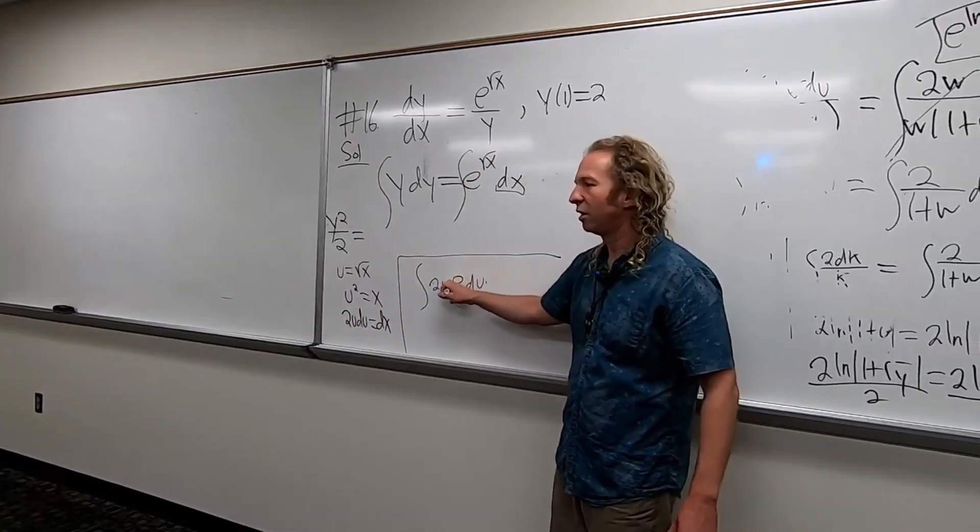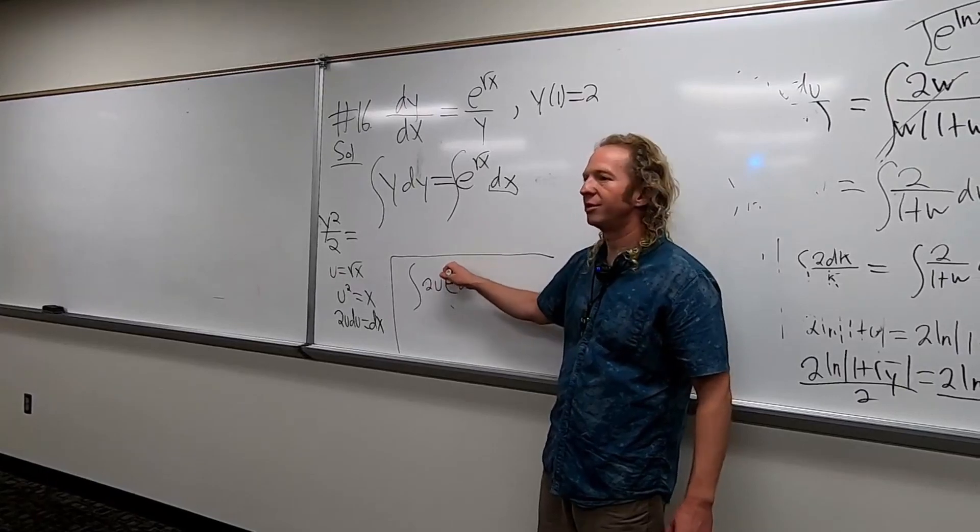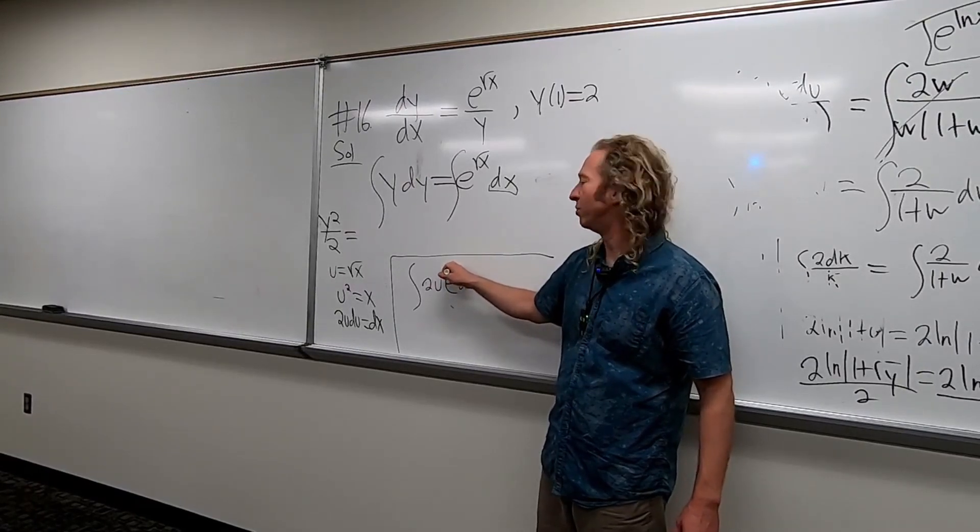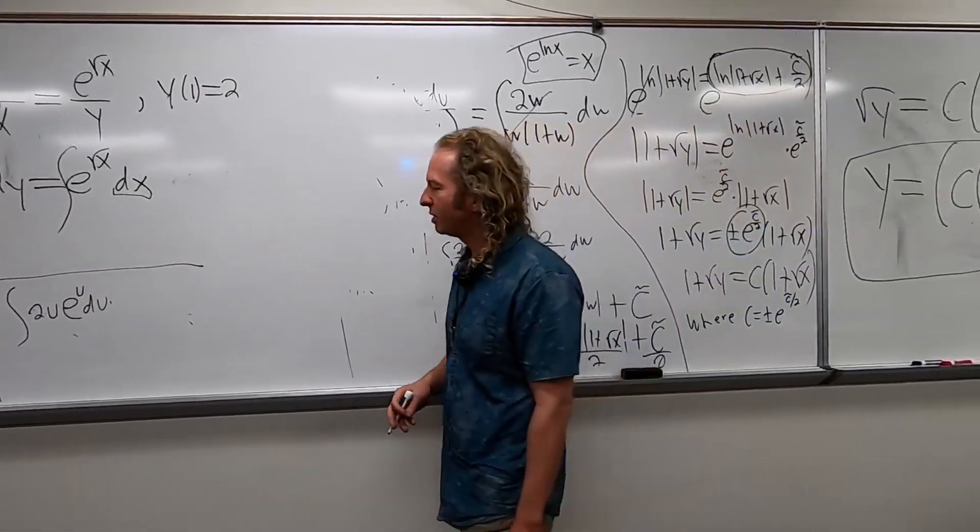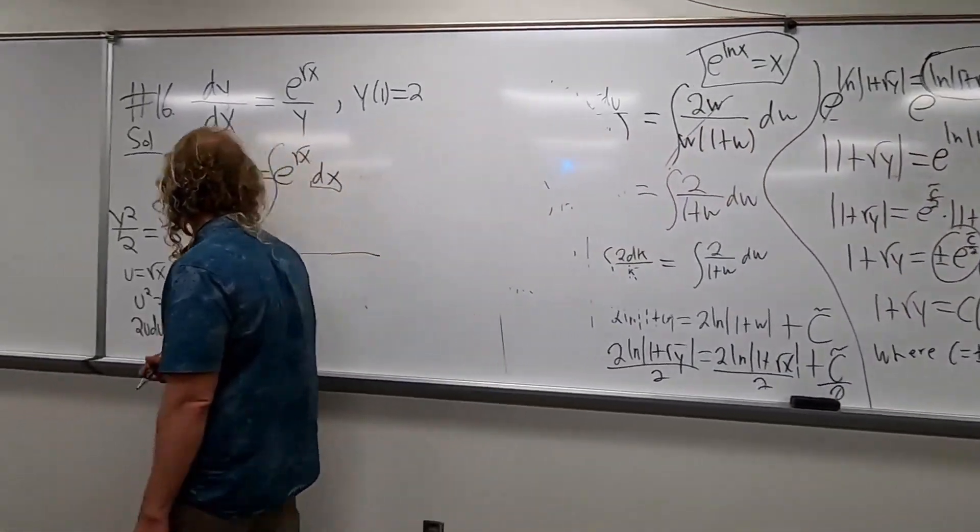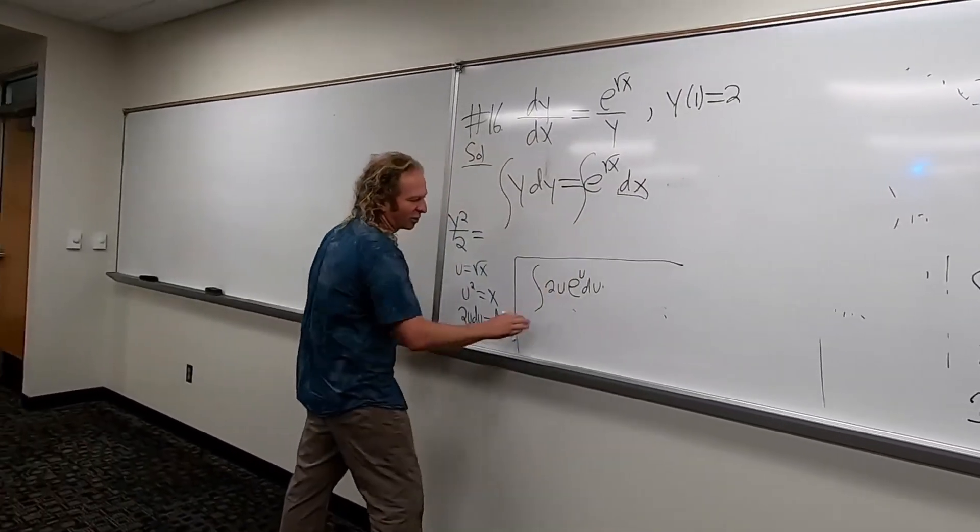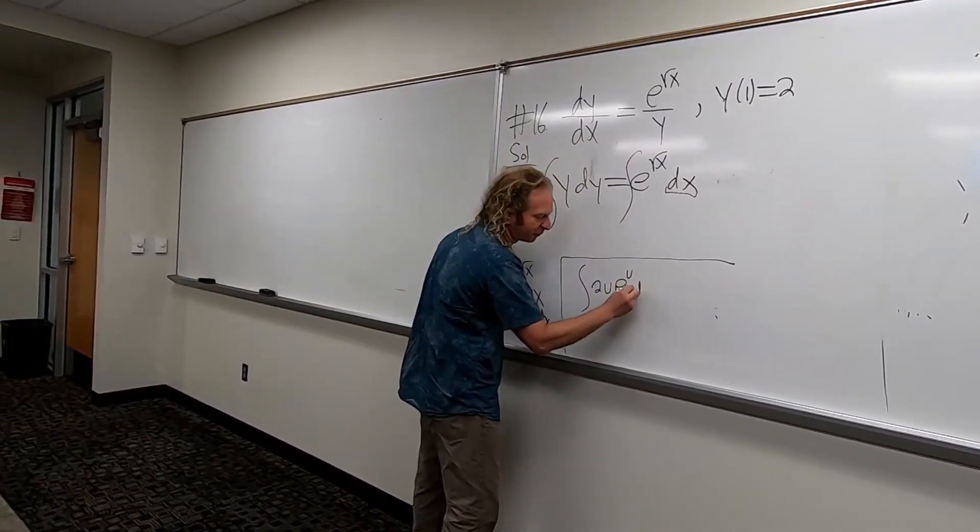So 2u du, replace dx with 2u du. And then we're left with e to the, and what would go here in this case? u. Very good, u. So that's our new integral, right? 2u times e to the u times du.